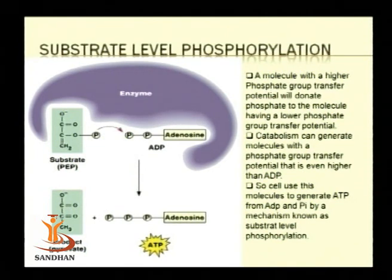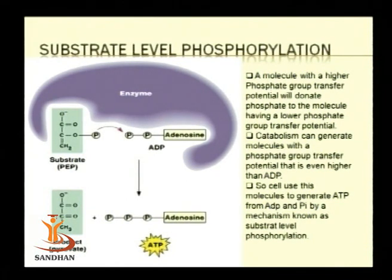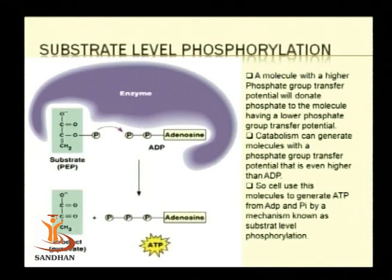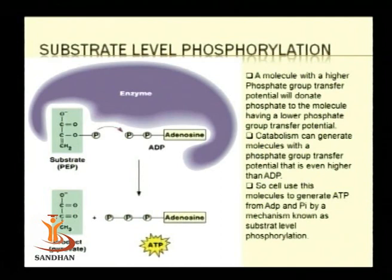This is how ADP gets phosphorylated by its direct interaction with a high-energy intermediate, and the mechanism is known as substrate-level phosphorylation. Generally, substrate-level phosphorylation is the widespread mechanism of ATP generation in chemoheterotrophs — especially anaerobic chemoheterotrophs with fermentative metabolism — which do not have electron transport chain components and cannot use inorganic compounds as final electron acceptors.